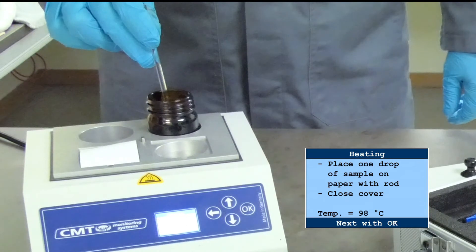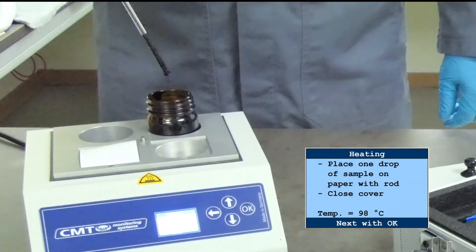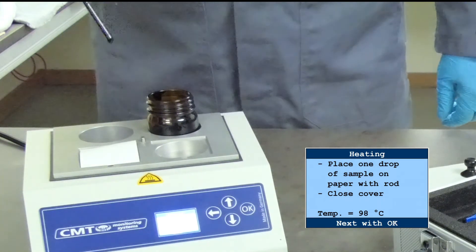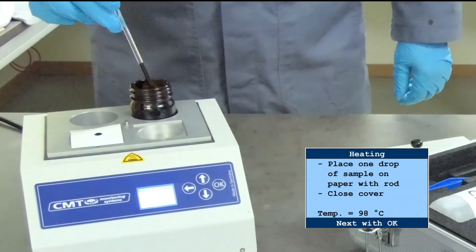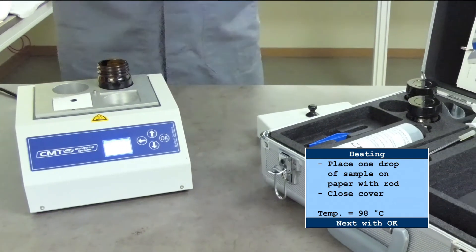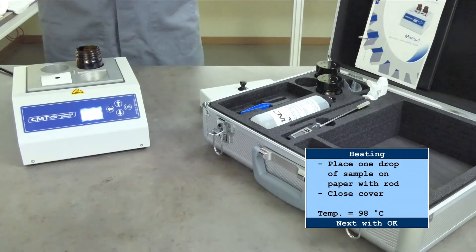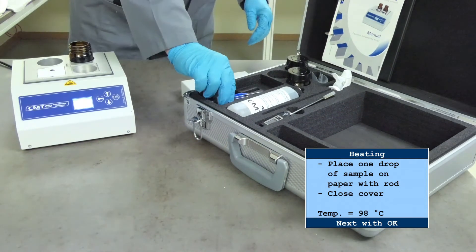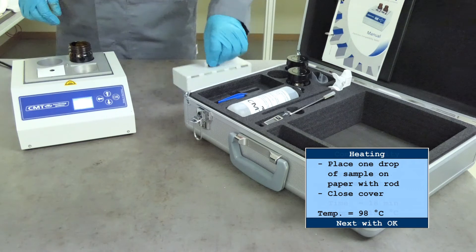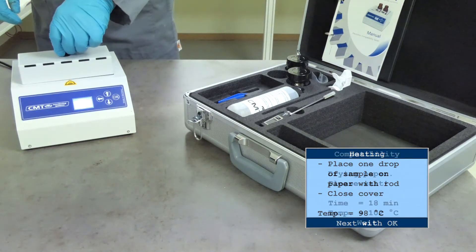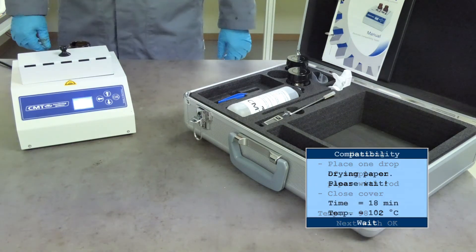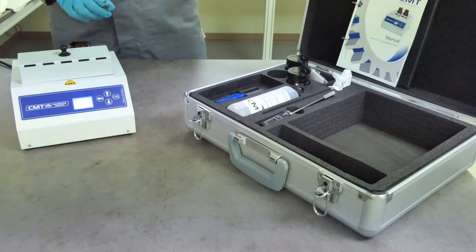Withdraw the rod and allow one drop to fall back into the glass bottle. Drop the next one in the center of the sheet of test paper on the heating plate. Close the cover over the heating plate and press OK. Allow the test paper to dry for one hour. The counter on the display will show the time left.